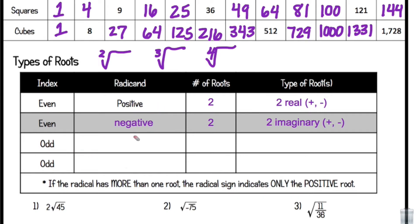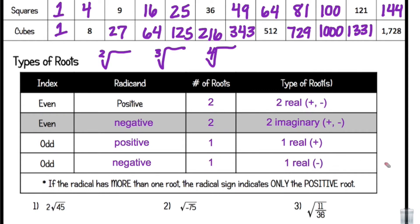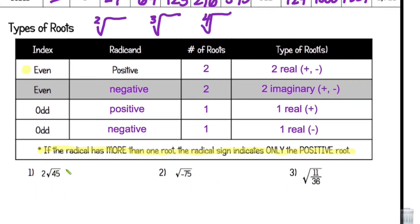For odd indexes, when the radicand is positive, there will be one root, and it will be real and positive. If we have an odd index and a negative number, the number of roots will also be one, but in this case it will be a negative number. One more thing: if the radical has more than one root, the radical sign indicates only the positive root. So when simplifying radicals, we're only going to look at the positive root.